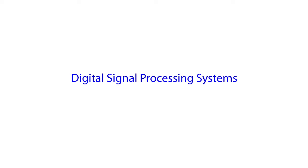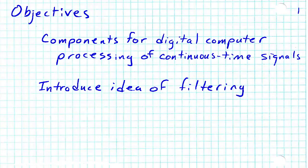Signals are often processed or manipulated using digital systems. In this video we're going to discuss some of the components involved in using a digital computer to process continuous time signals. We're also going to introduce a commonly used processing technique, and that is filtering.